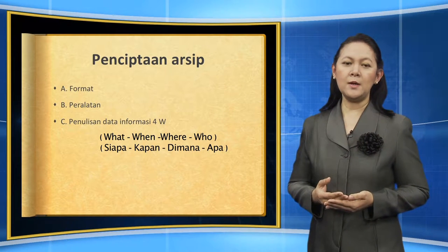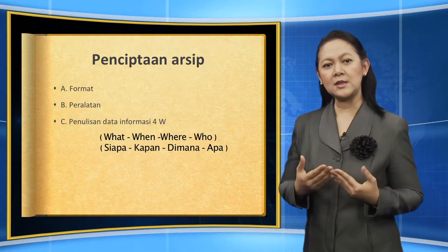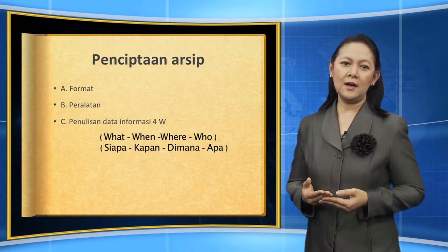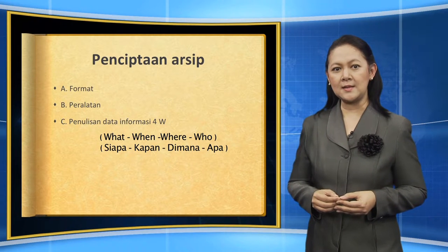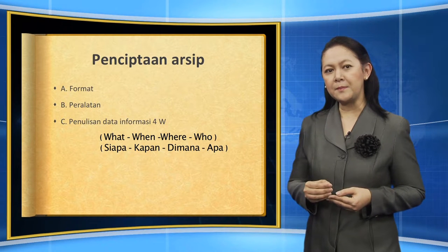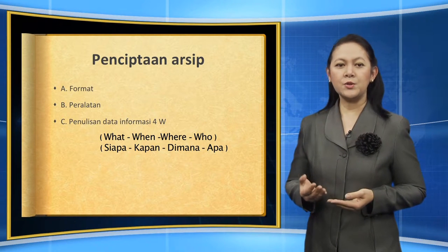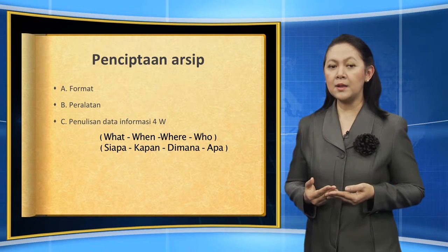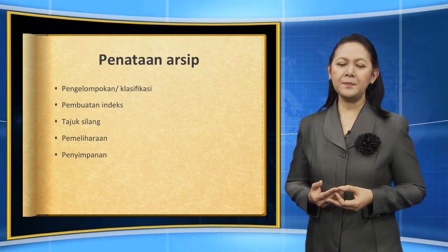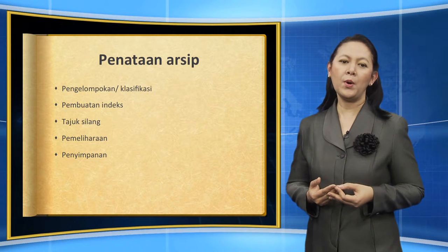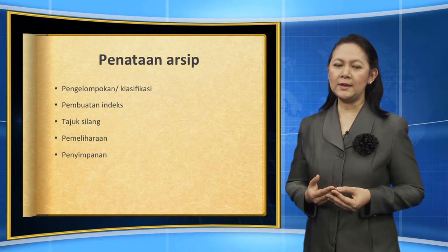Kalau kita bicara masalah format, ada banyak bentuk format yang bisa kita lihat dalam bentuk arsip — salah satunya apakah itu tercetak, apakah itu elektronik, ataukah itu terekam. Kemudian langkah selanjutnya setelah penciptaan arsip, yang harus kita perhatikan adalah peralatan yang berhubungan dengan format yang akan kita buat. Kalau semua itu sudah kita lakukan, langkah berikutnya terciptalah sebuah arsip, yaitu penataan arsipnya. Dalam penataan arsip, kita dapat mengelompokkan berbagai arsip menurut kelompok tersendiri, ataupun klasifikasi, dan pembuatan indeks.